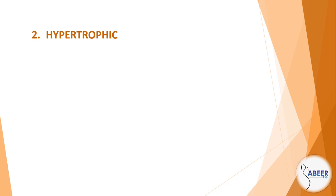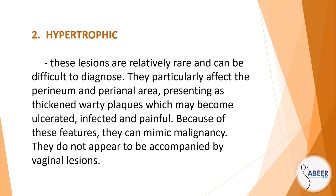Number 2: Hypertrophic. These lesions are relatively rare and can be difficult to diagnose. They particularly affect the perineum and perianal area, presenting as thickened warty plaques, which may become ulcerated, infected, and painful. Because of these features, they can mimic malignancy. They do not appear to be accompanied by vaginal lesions.